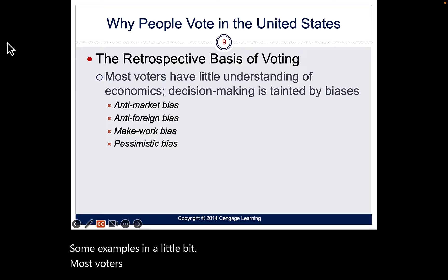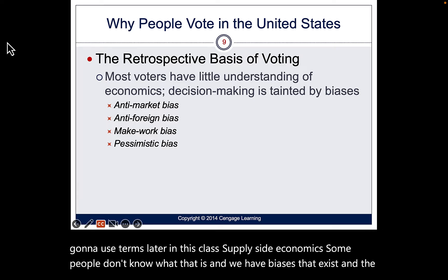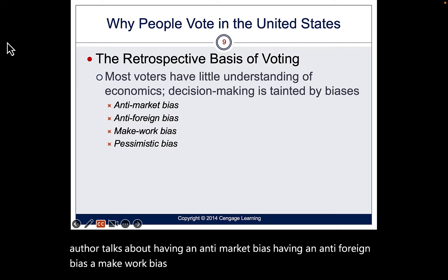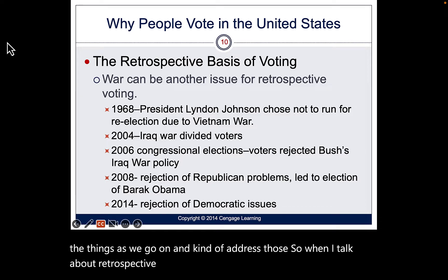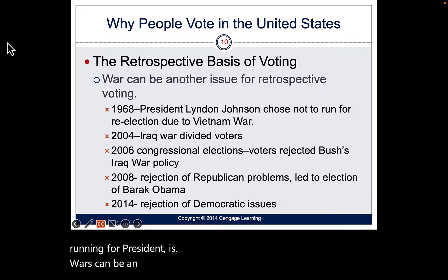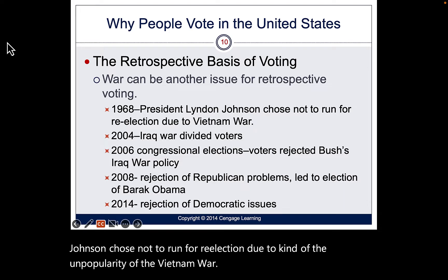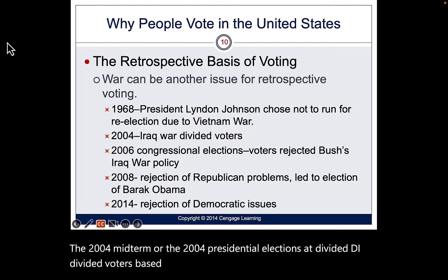Most voters have little understanding of economics. The author talks about biases: anti-market bias, anti-foreign bias, make-work bias, and pessimist bias. Examples of retrospective voting include Lyndon Johnson choosing not to run for re-election due to the unpopularity of the Vietnam War, the 2004 presidential election dividing voters over Iraq and Afghanistan, and the 2006 congressional elections where Republicans lost Congress, tied to voter rejection of Bush's Iraq and Afghanistan war policies.